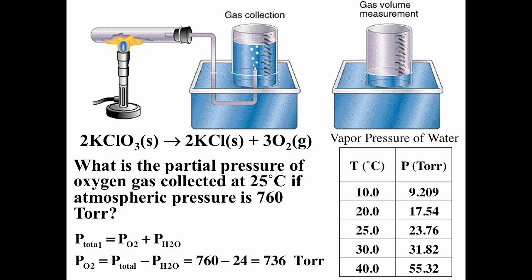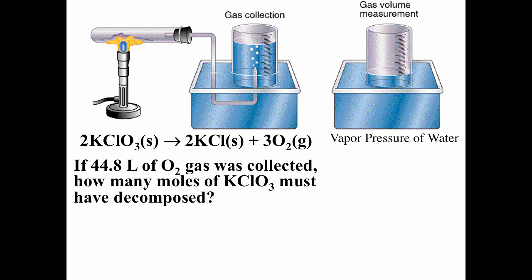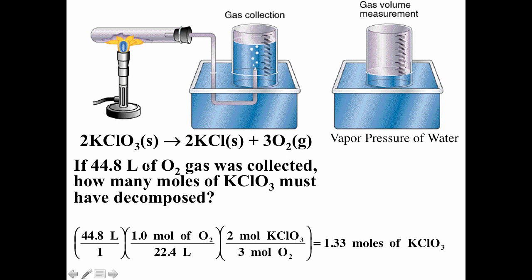This calculation is needed to determine how much O2 was actually collected. If 44.8 liters of O2 was collected, how many moles of potassium chlorate decomposed? At STP, 1 mole = 22.4 L, so 44.8 L / 22.4 L/mol = 2 mol O2. From the reaction stoichiometry, for every 2 moles of KClO3 that decompose, 3 moles of O2 are produced, giving 1.33 moles of potassium chlorate. If not at STP, use ideal gas law to find moles of O2 first.